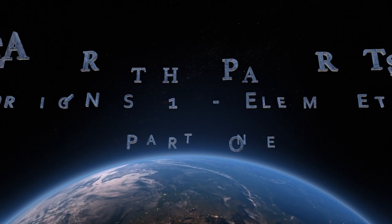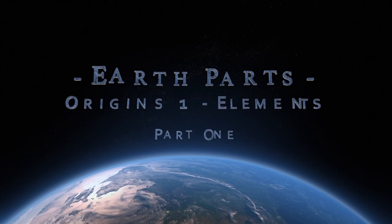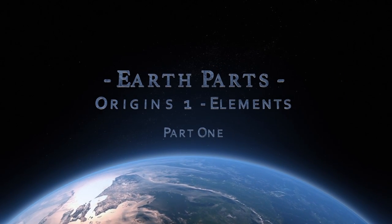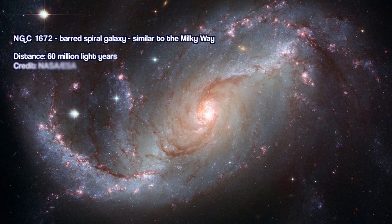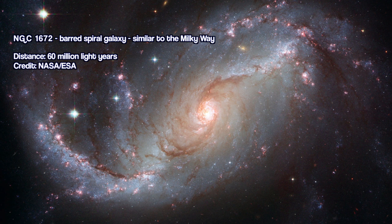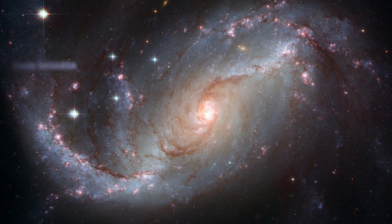Hi, I'm Dr. Johnson Haas, and welcome to Earth Parts. What you see here is NGC 1672. It's a barred spiral galaxy, very similar, we think, to what the Milky Way looks like from the outside.